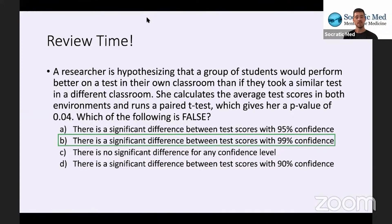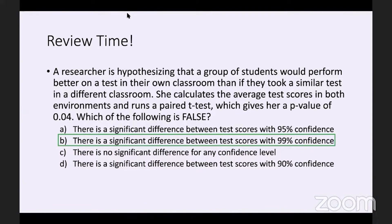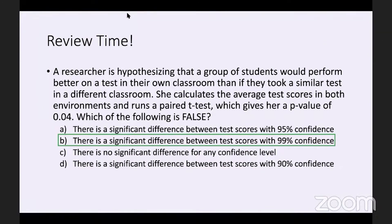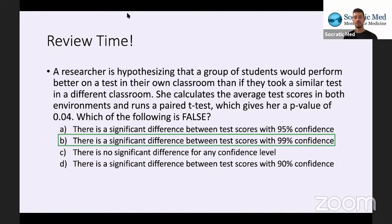The question asks for which statement is false. Alpha is one minus confidence — so if confidence is 0.95, alpha is 0.05. You compare that to the P value of 0.04. If P is less than alpha, the results are significant. You can change the levels of confidence — 0.05 is greater than 0.04, so there is a significant relationship.